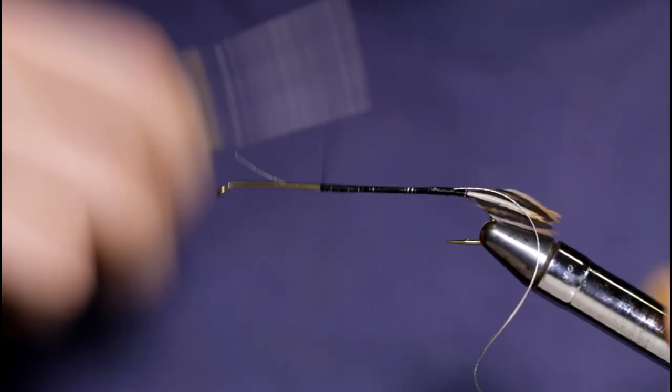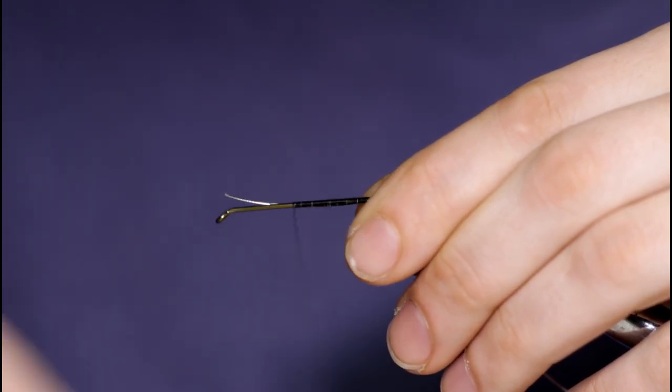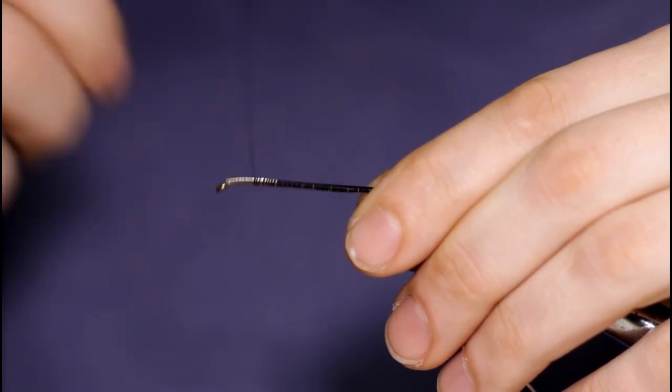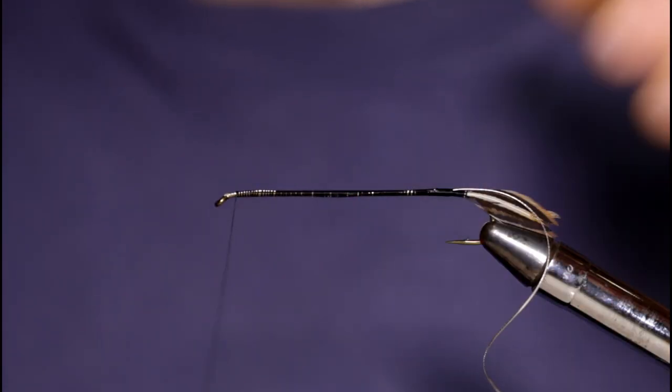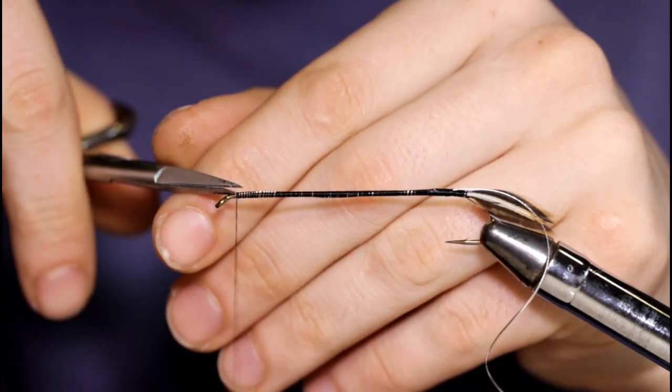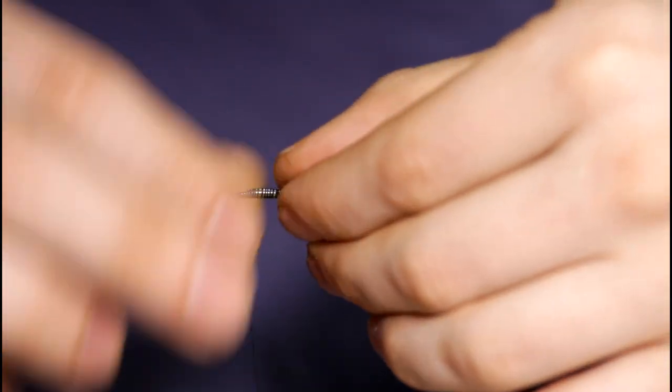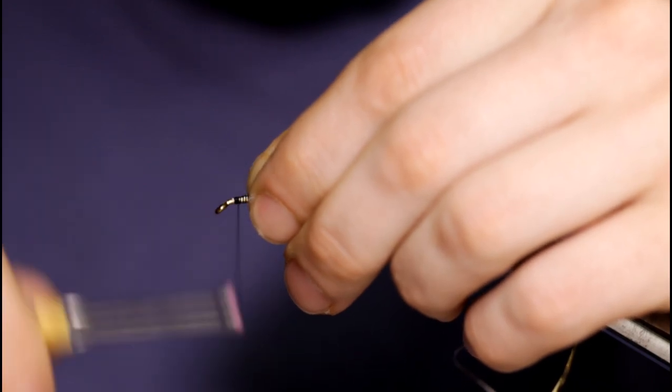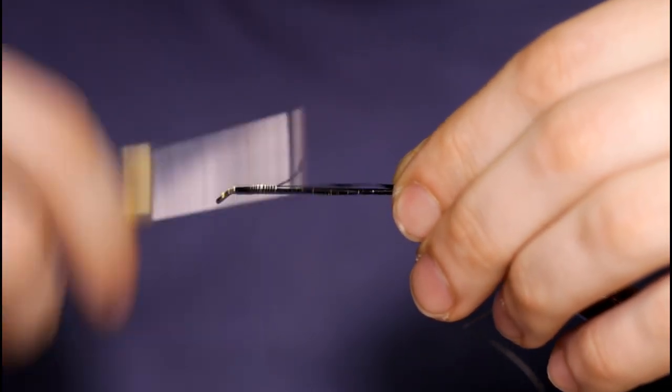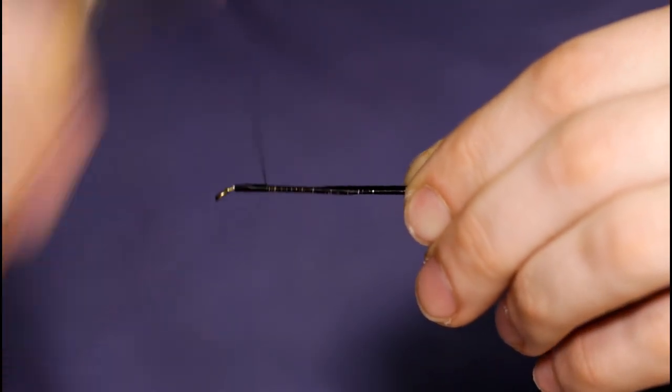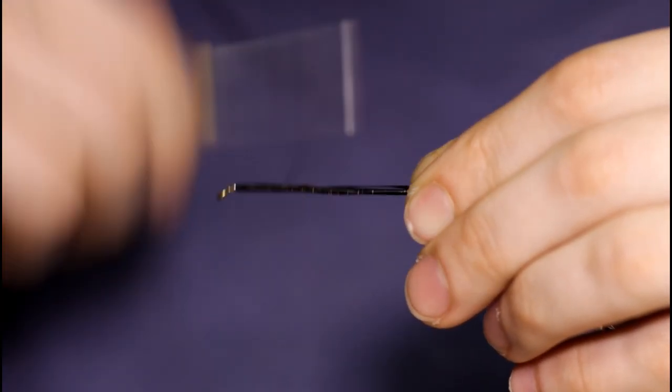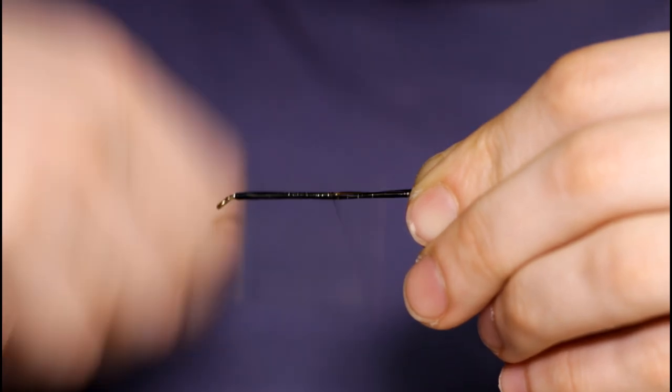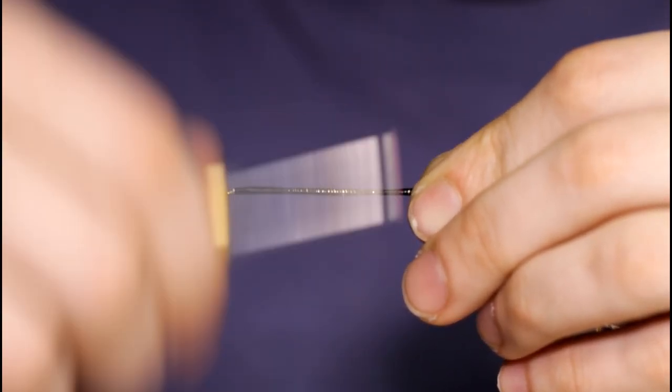And the turns don't have to be perfect here. I'm just going to wind down towards the eye and snip off this little bit of material. Now I've got my flat silver tinsel. You could just stop the thread here and wind all the way down and make two passes with the tinsel, but I'm just going to wind this on all the way down. So that I don't have to wind all the way back up, I'm going to leave the thread here at the barb and use it as a guide to wrap up with.